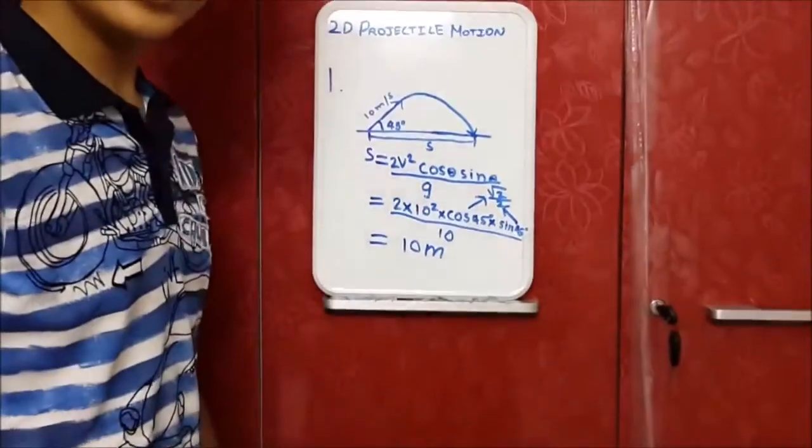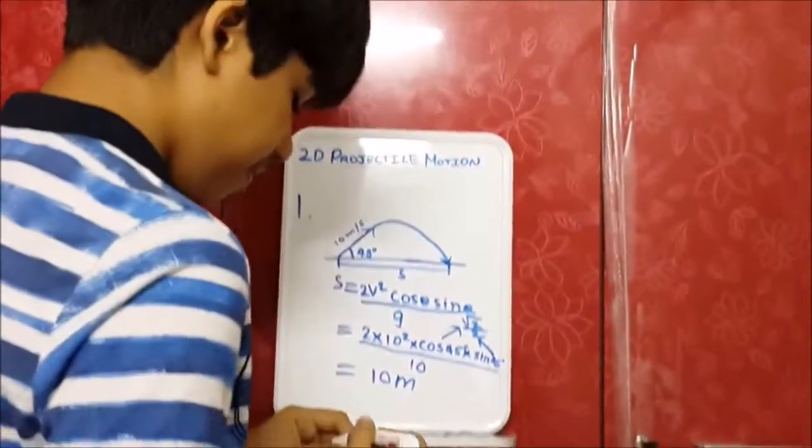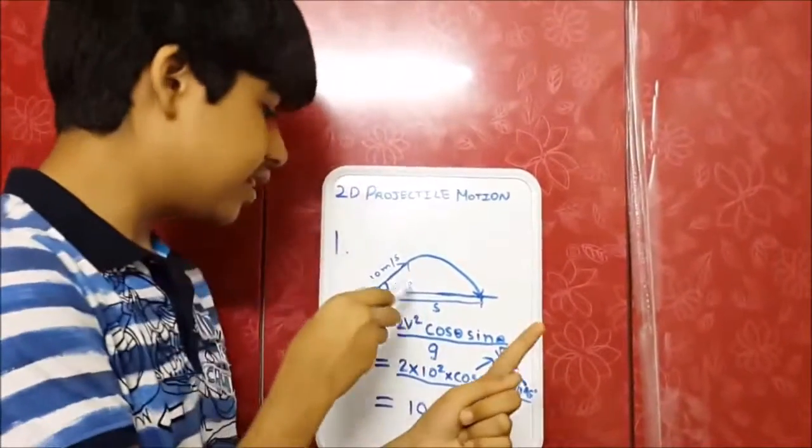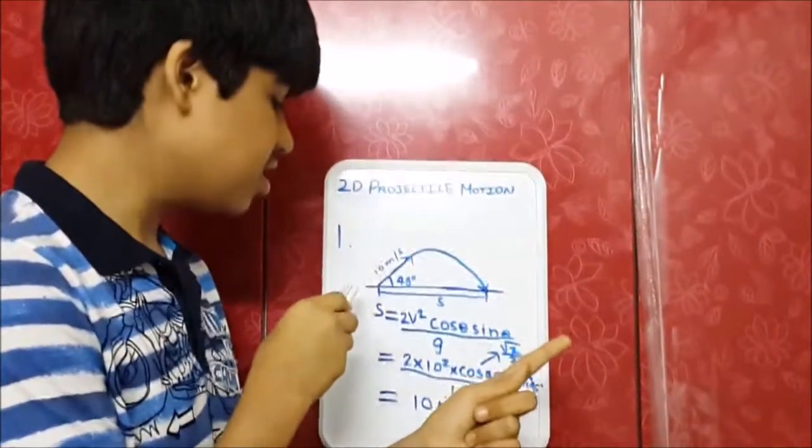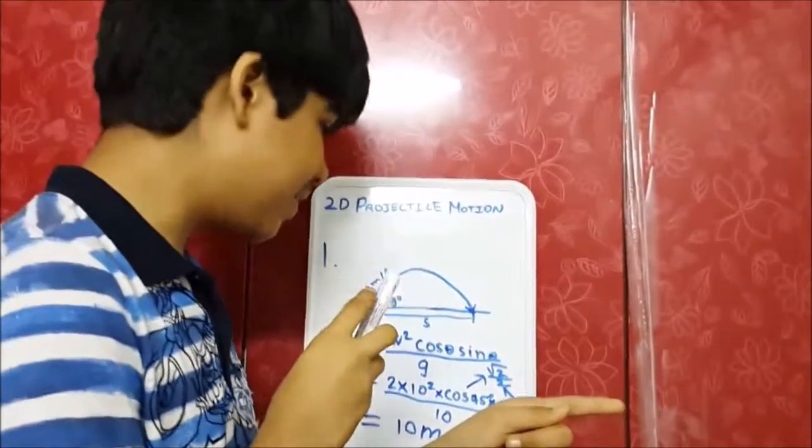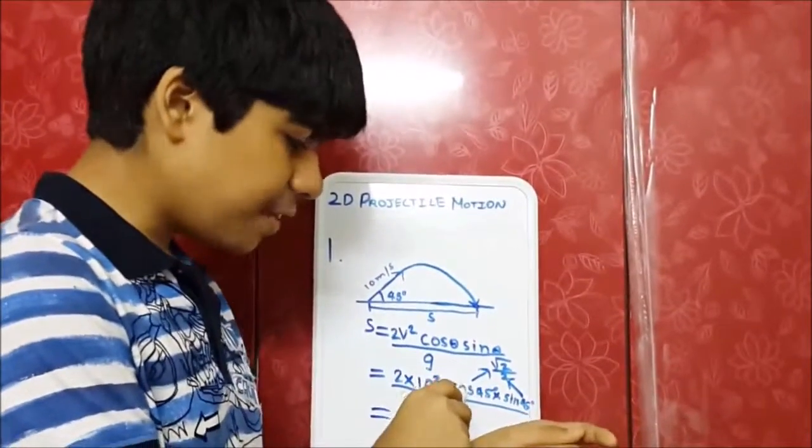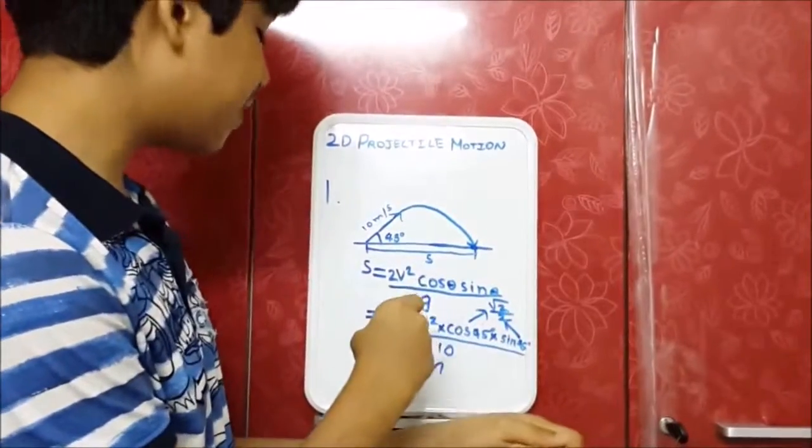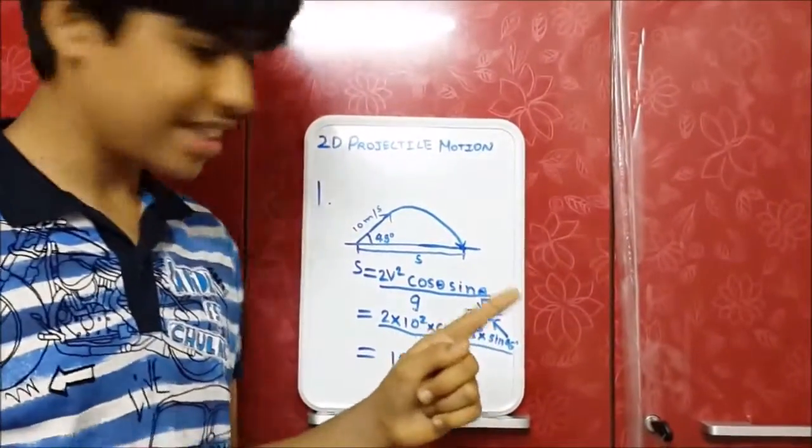So we have 10 squared divided by 10 which is just 10 equals 10 meters. Now we just notice the loophole. There's a shortcut to this method. If your launch angle is 45 degrees, then there's a fast formula which you can use because cosine 45 and sine 45 multiplied gives half and that half cancels with 2.